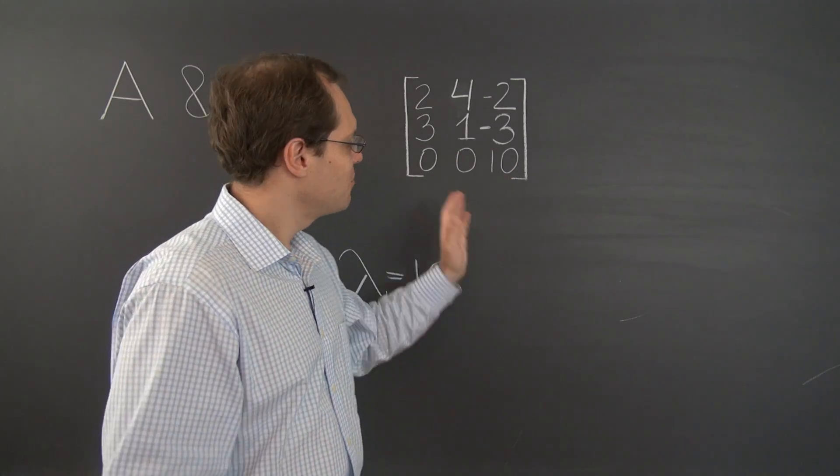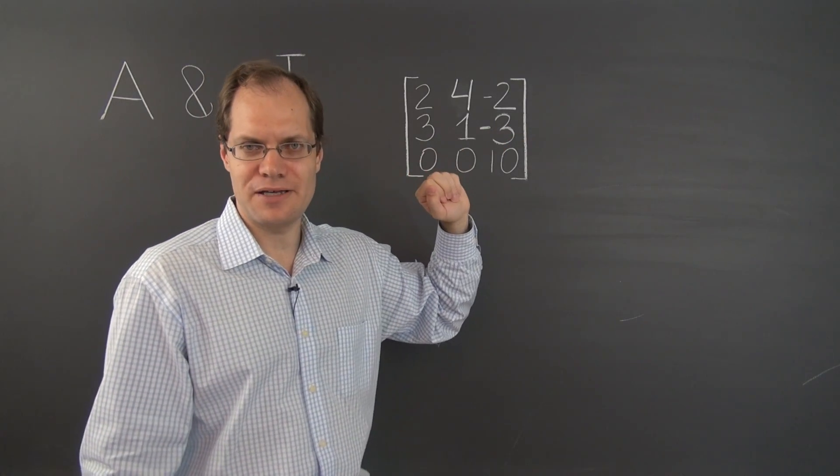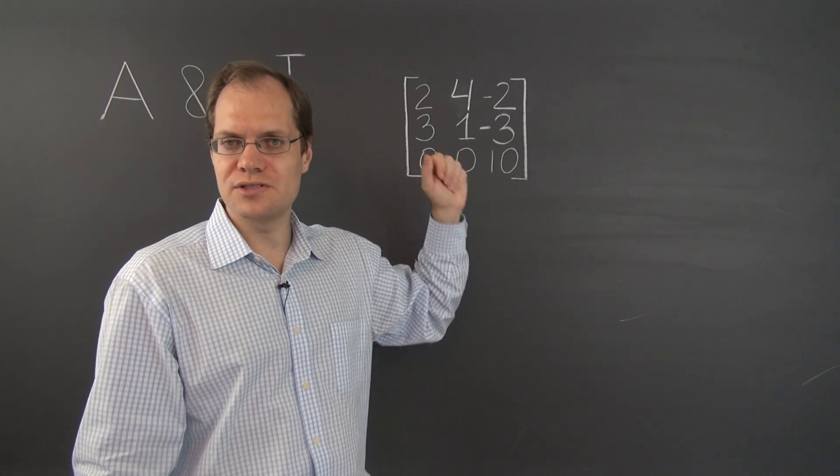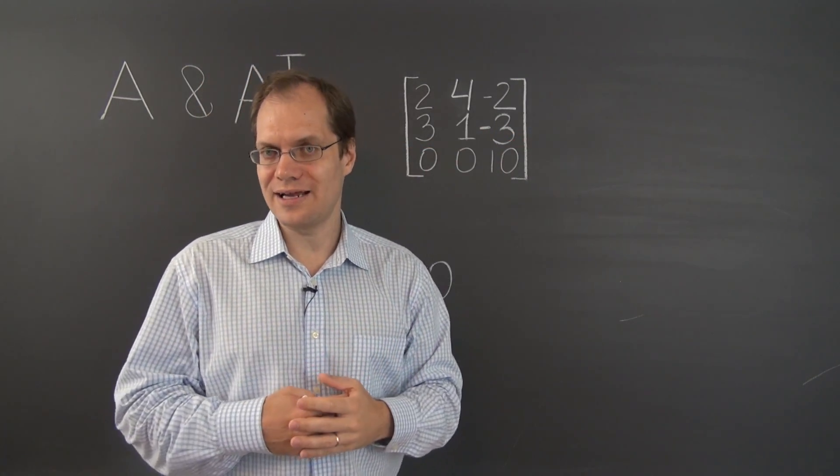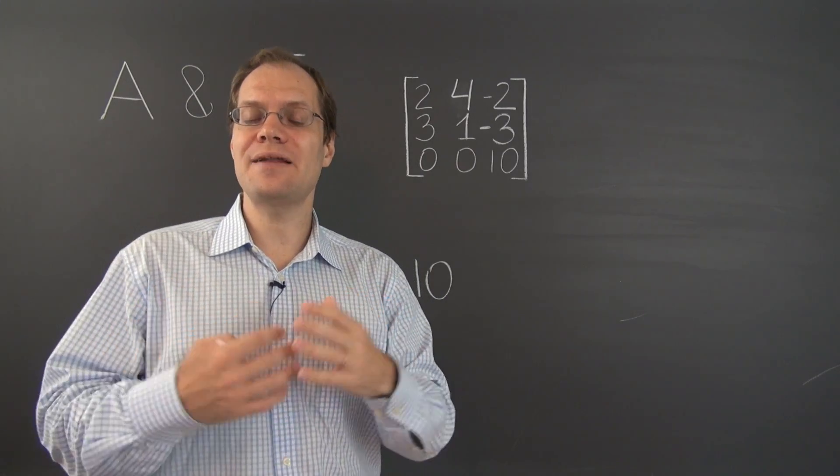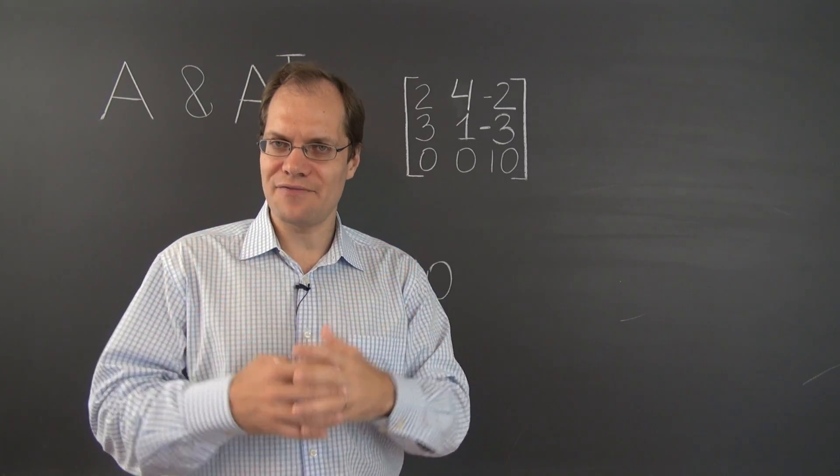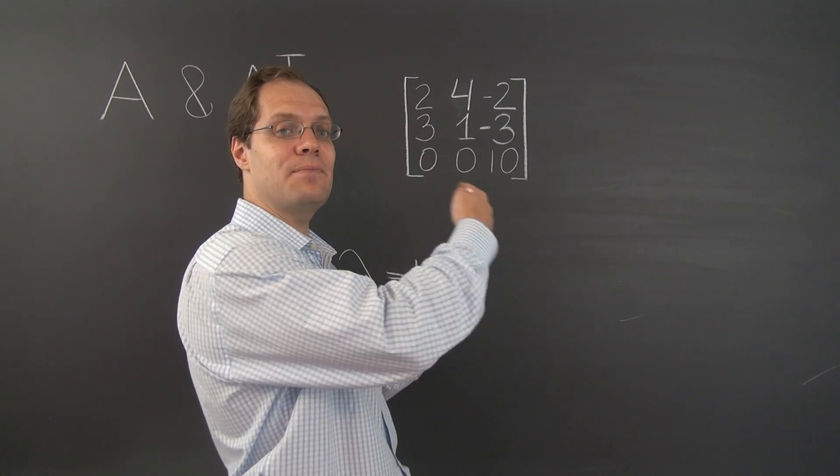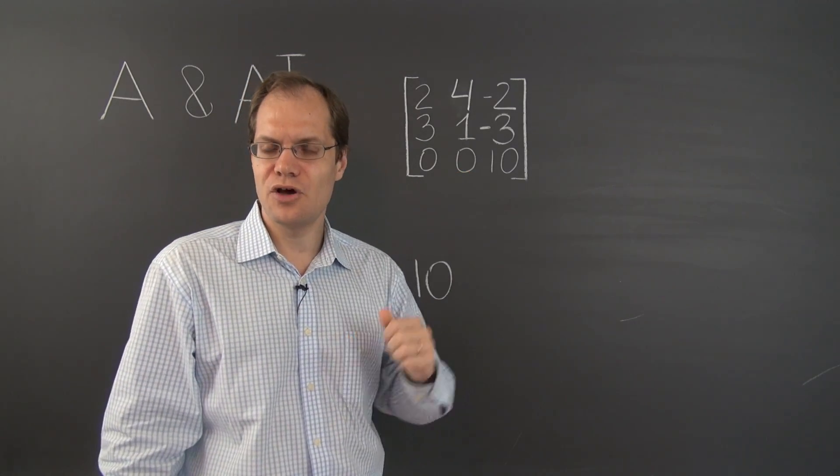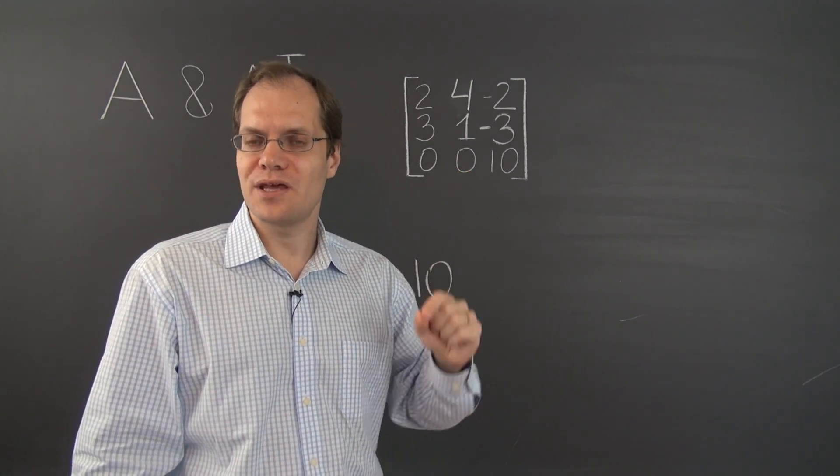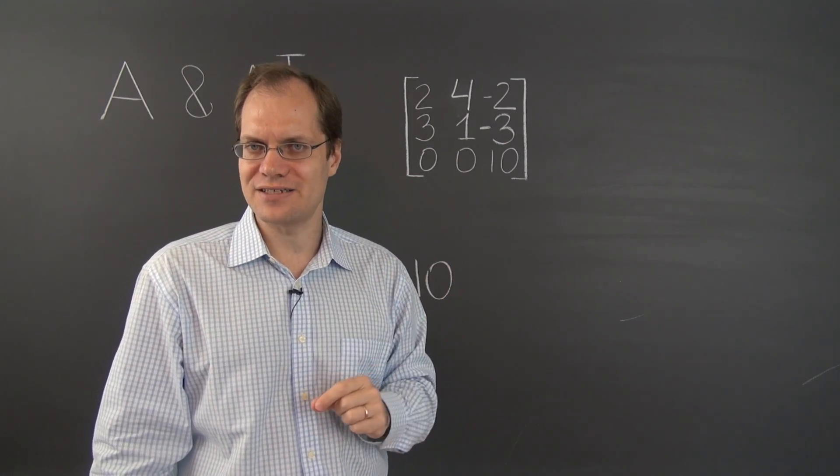Well, that's relevant once again because in the transpose of this matrix, columns will become rows. Every row will add up to 5. And we know what that means. That means that 5 is an eigenvalue and for that matrix, the transpose of this one, 1, 1, 1 is the corresponding eigenvector.